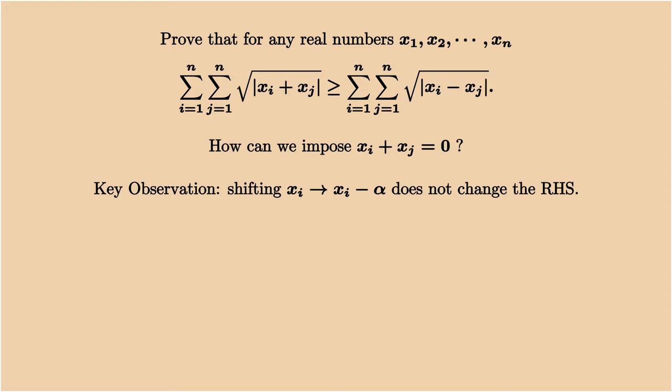The key observation is when we shift the numbers by a constant, the right-hand side does not change. So we have an additional parameter alpha to play with. Adjusting alpha can make the sum of xi and xj equal to 0.